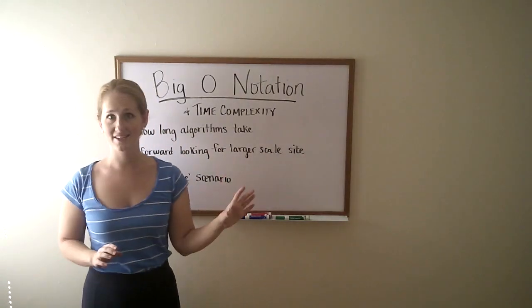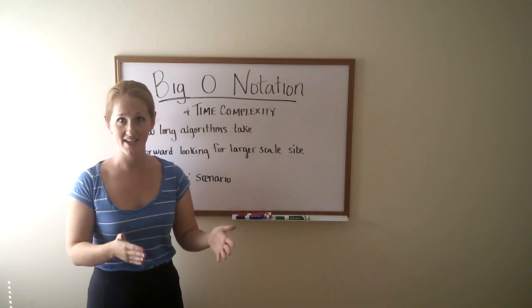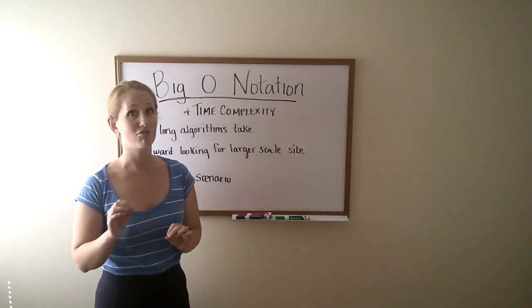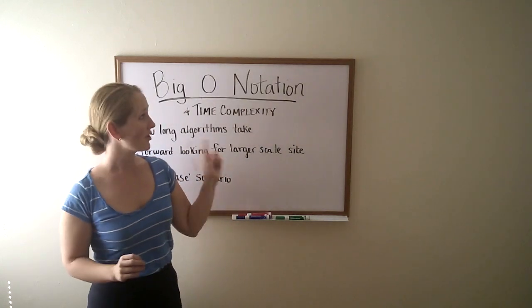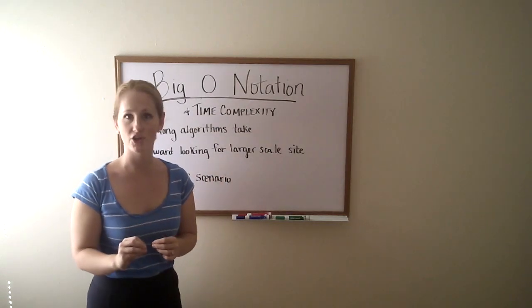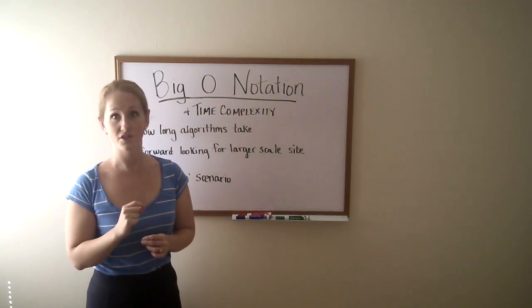Big O notation comes in handy if you're building a tool or a site and you want it to be scalable for large amounts of traffic. Big O notation will start to point out some places in your code where that is going to slow down users once we get more users in the system.